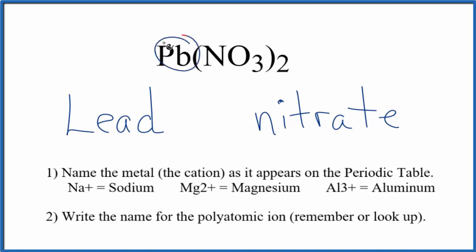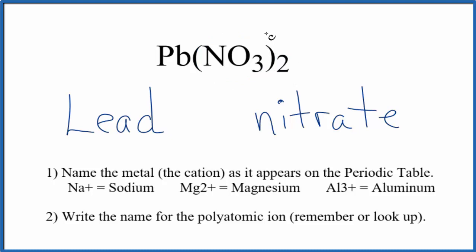But lead is a transition metal, and that means it can have a different charge depending on what it's bonded to. Here it's bonded to two nitrate ions, and each one of those nitrate ions has an ionic charge of 1 minus. Two times 1 minus is 2 minus, so the lead has to be 2 plus.